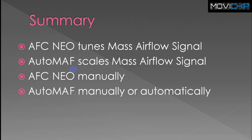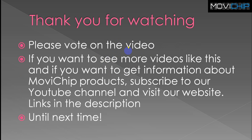In summary: the AFC Neo tunes the mass airflow sensor signal using TPS and RPM; the Auto Math scales the MAF signal using MAP sensor only. The AFC Neo must be tuned manually, which can be time consuming; the Auto Math can be tuned manually or automatically. That's a quick comparison of the AFC Neo and the Mobile Chip Auto Math. Thanks for watching - please like and subscribe if you want to see more videos like this. Check the website for latest news and upcoming products; links are in the description. Take it easy and see you next time.